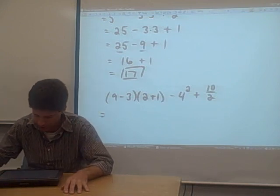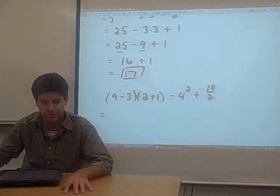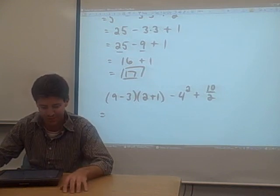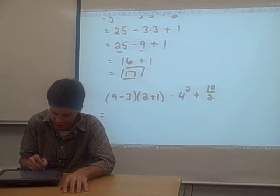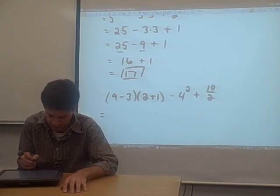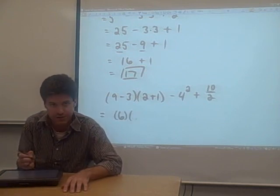Okay, so we need to go through our order of operations here. The first thing in our order of operations is parentheses, so we need to simplify what's in parentheses. In this case, it's pretty obvious. There's a nine minus three and there's a two plus one in parentheses. Nine minus three is six. Two plus one is three.